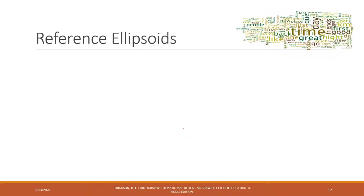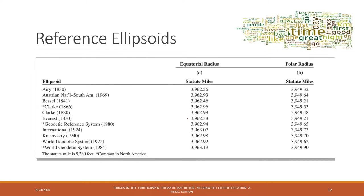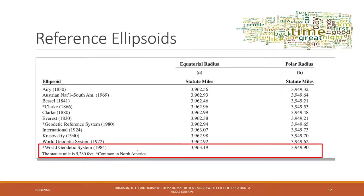There are several different types of ellipsoid reference systems. The one most commonly used in GIS is called WGS 1984. You will hear this term a lot in GIS — WGS 1984 is the most commonly used ellipsoid system.